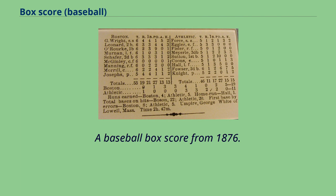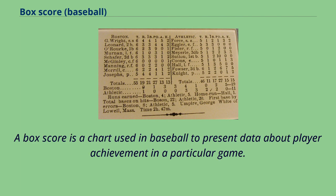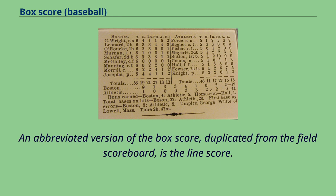A baseball box score from 1876. A box score is a chart used in baseball to present data about player achievement in a particular game. An abbreviated version of the box score, duplicated from the field scoreboard, is the line score.